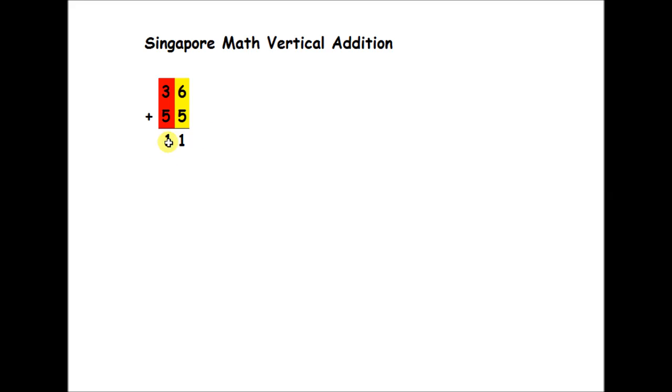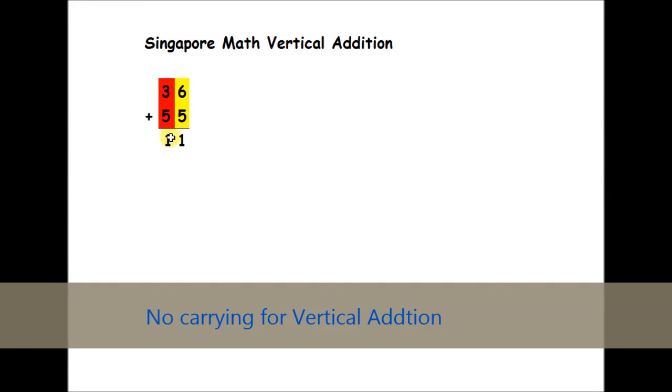So 6 plus 5 gives us 11. And this is really what the number is. It's a 10 and it's a 1 instead of carrying. So you have the number 11.